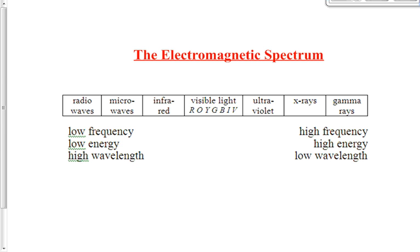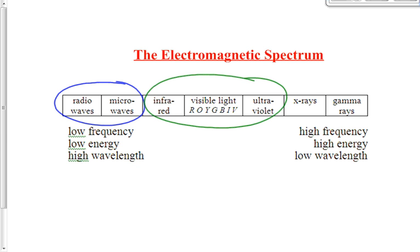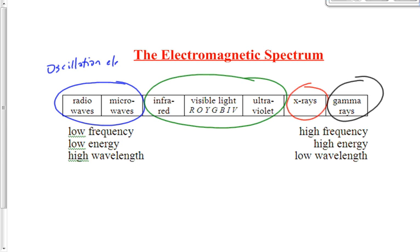Each type of EMR is produced in a specific way. Radio waves and microwaves — the easiest to produce — are generated by oscillating electric charge, essentially AC current moving back and forth.